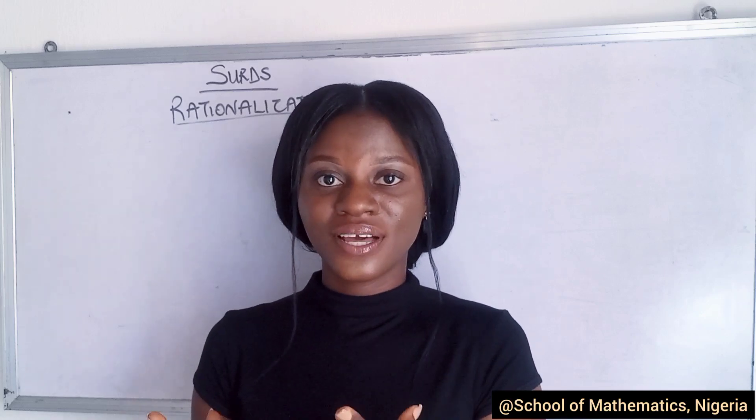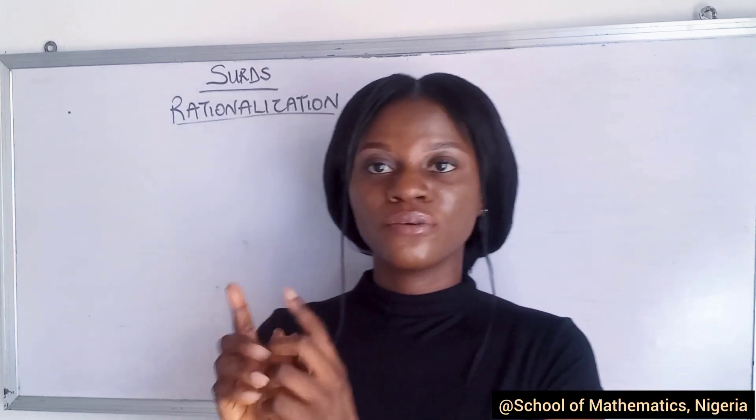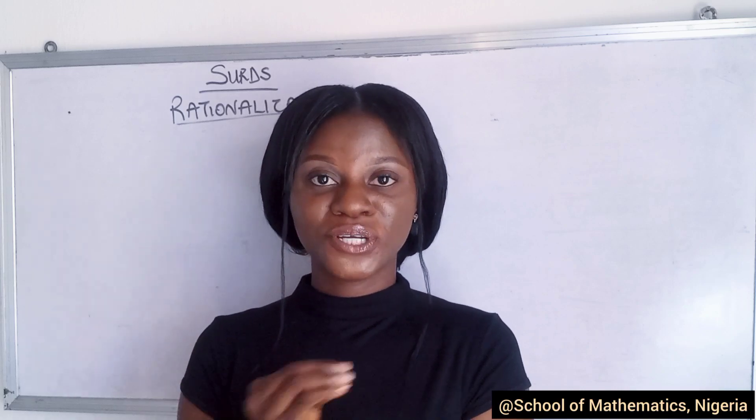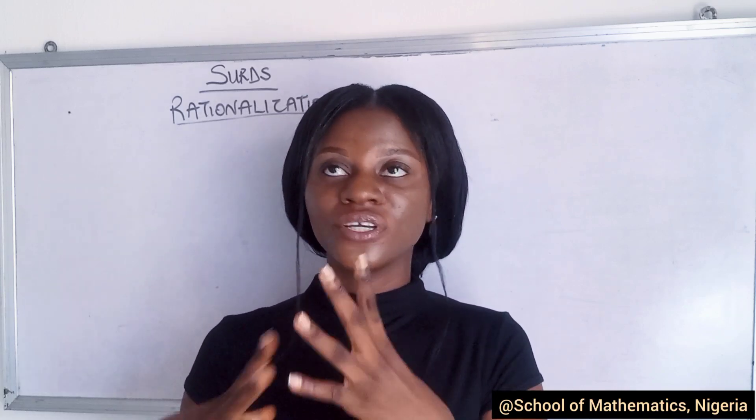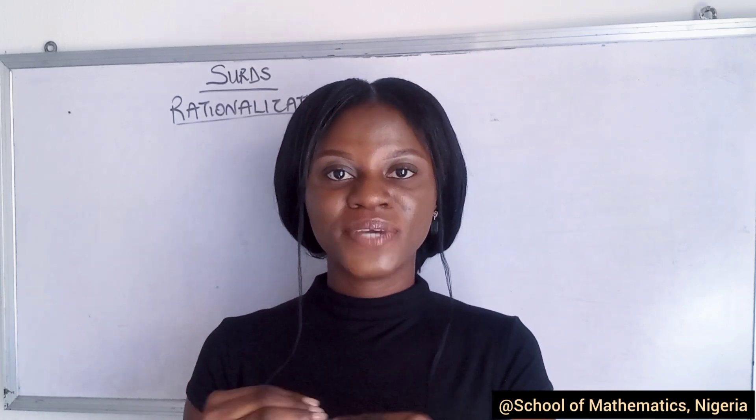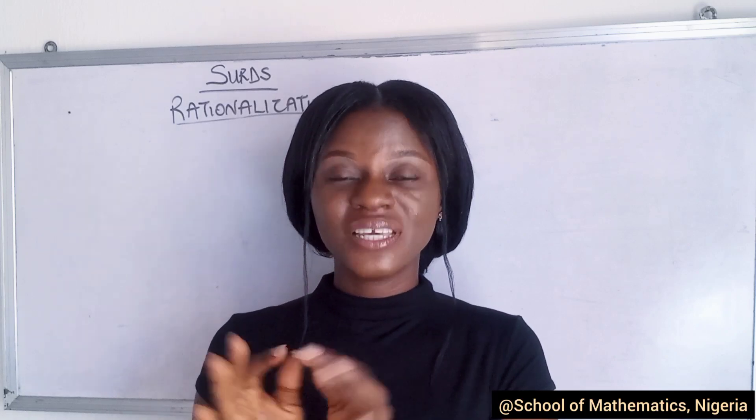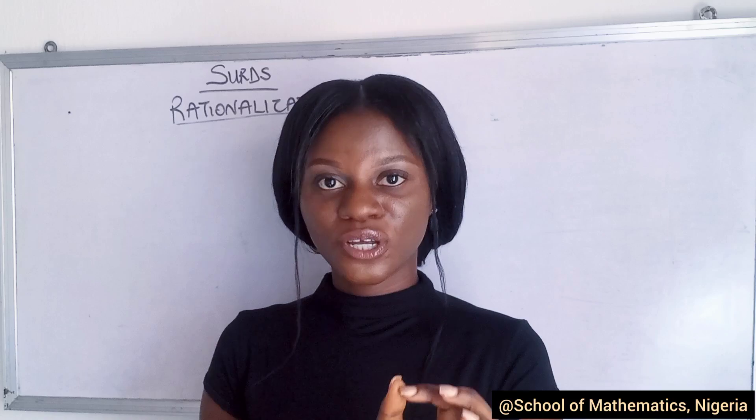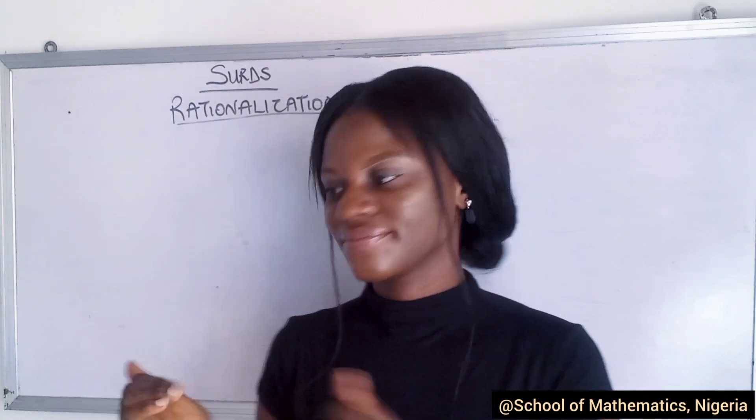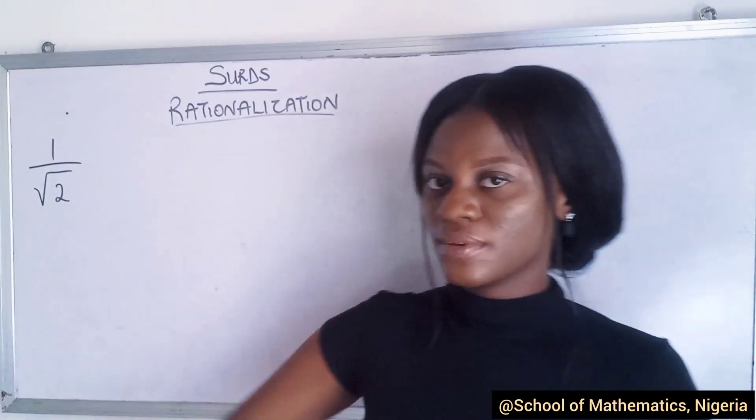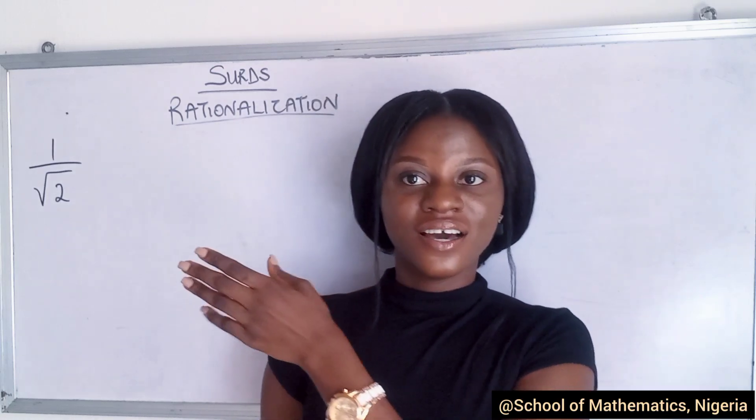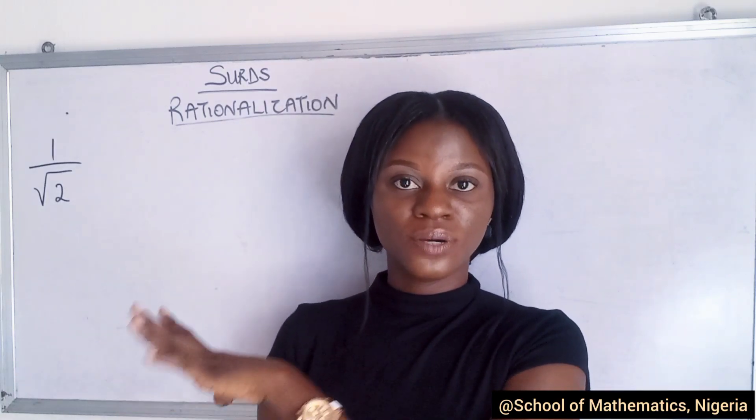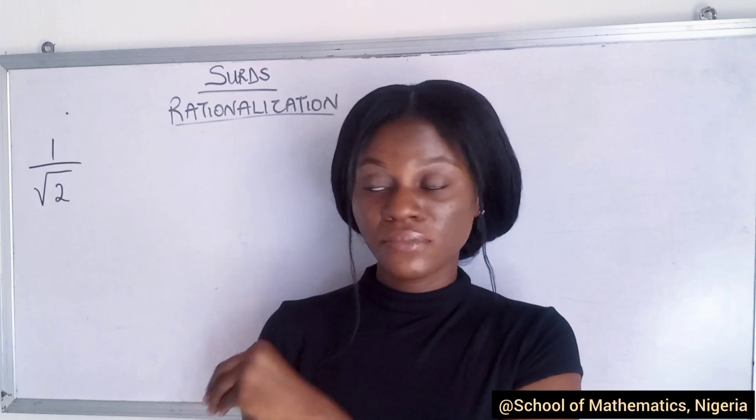Rationalization was gotten from the word rational numbers. When you're giving fractions, you're expected to rationalize them if the denominator is in its irrational form. What do I mean? So given something like 1/√2, in mathematics it is believed that this is an irrational form. We're meant to rationalize it, meaning this should not have the roots anymore.